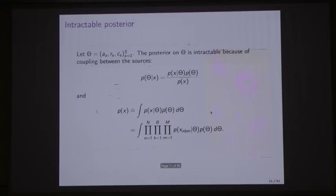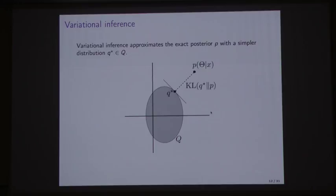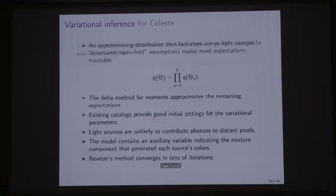The posterior is intractable, which is no surprise to this crowd. You can try to apply Bayes' rule, but the denominator has a high-dimensional integral. So we apply variational inference and try to approximate the posterior with a member of a simpler family. In Celeste, because the model is complicated, we have a number of tricks and techniques to make the optimization go through. We do a structured mean field assumption. There's one integral that's still difficult, so we use the delta method for moments to get an analytical bound on that expectation. It's non-convex optimization, so we use existing estimates of stars and galaxies, and hopefully the local minimum we find will be near a global minimum. We also use Newton's method for optimization, which gets very fast convergence in tens of iterations at the cost of having to calculate the Hessian and gradient.